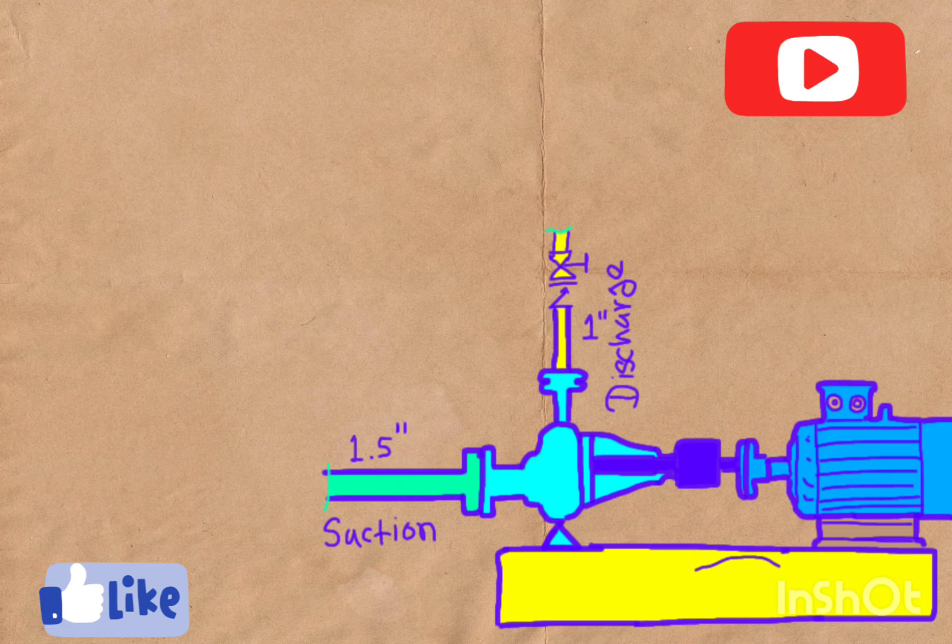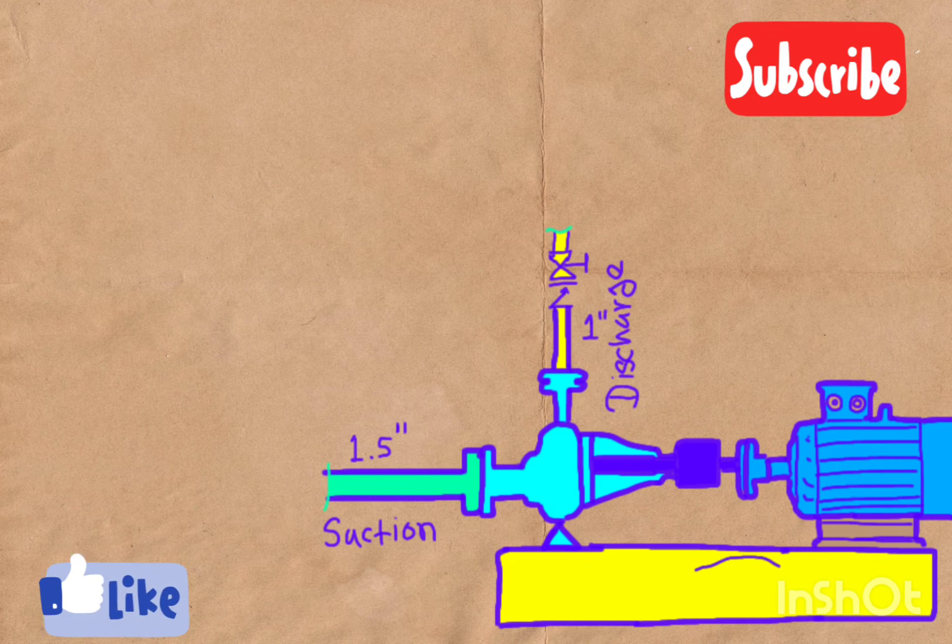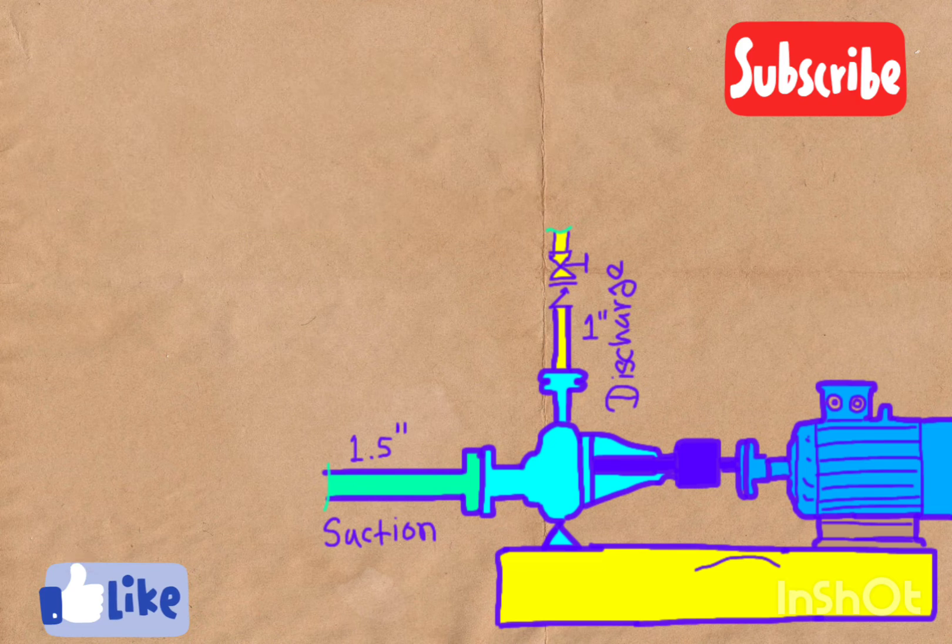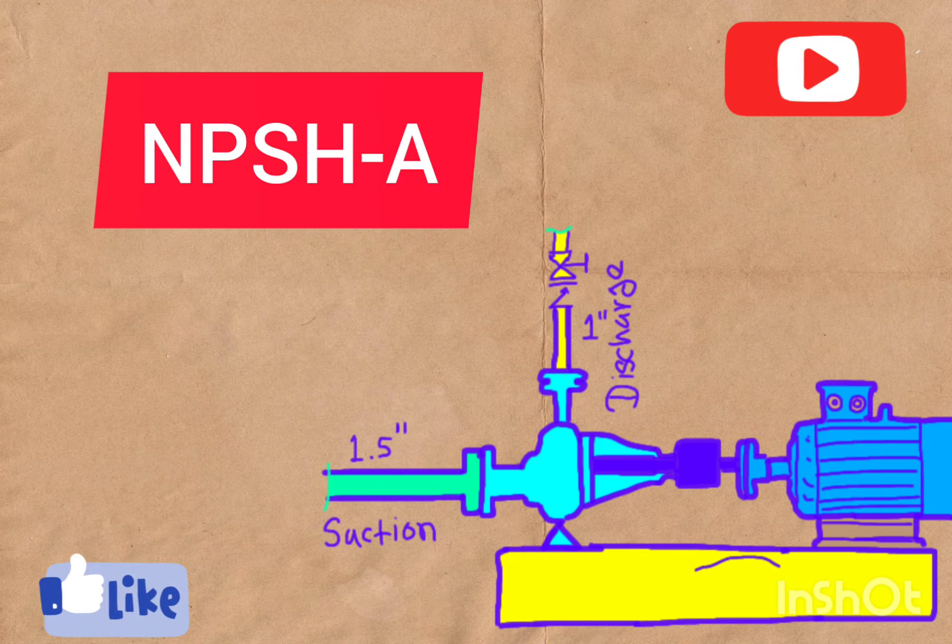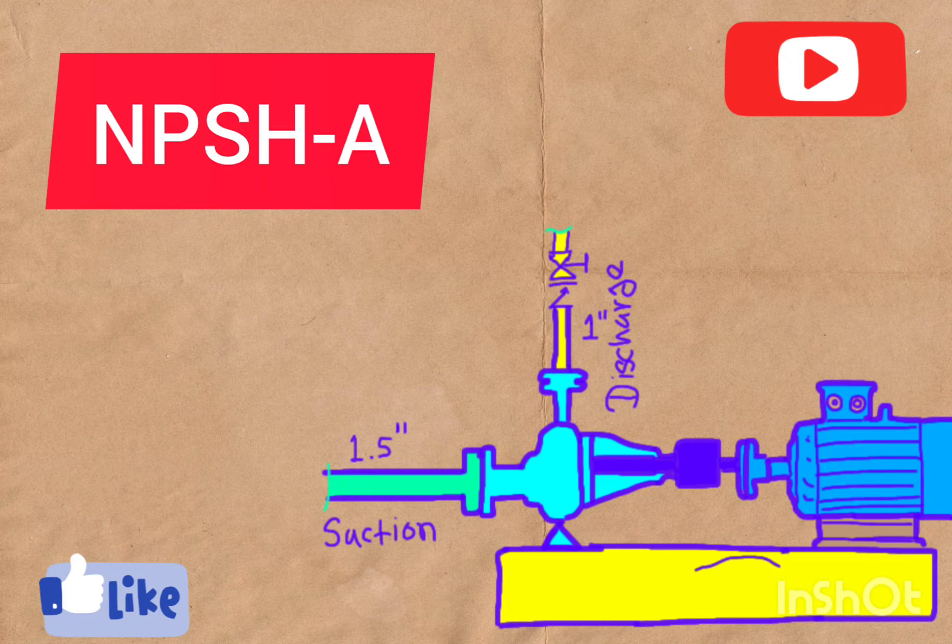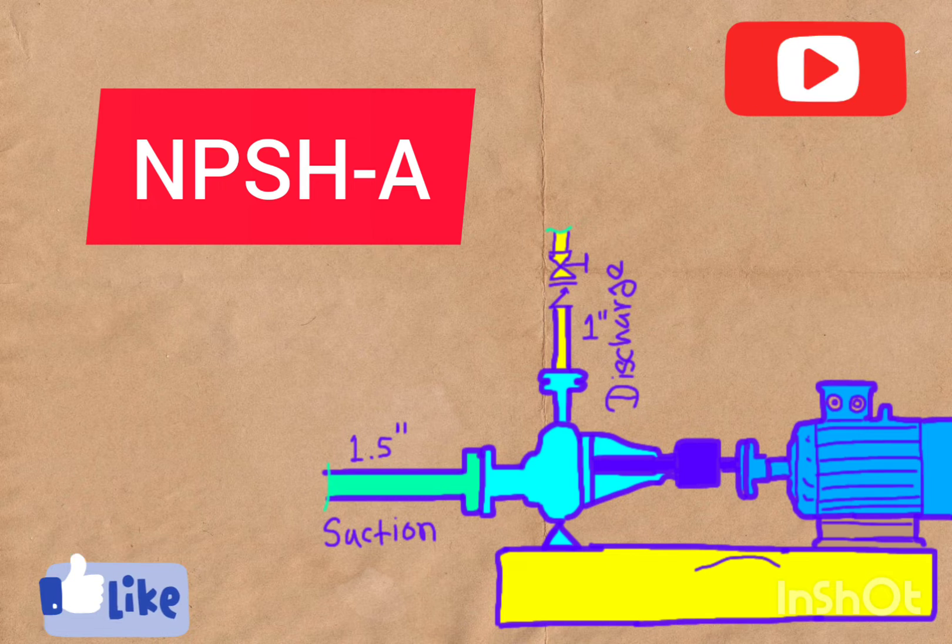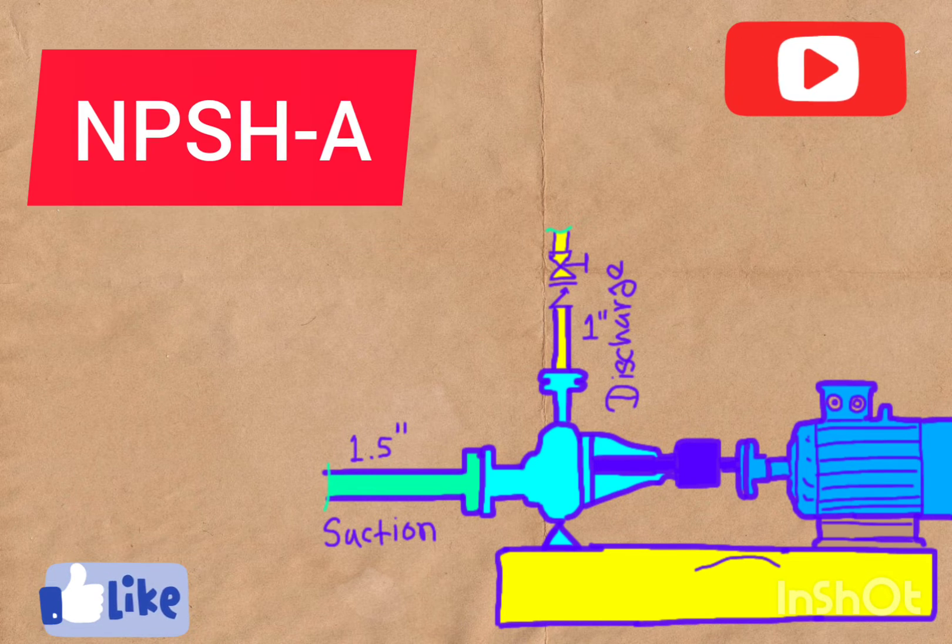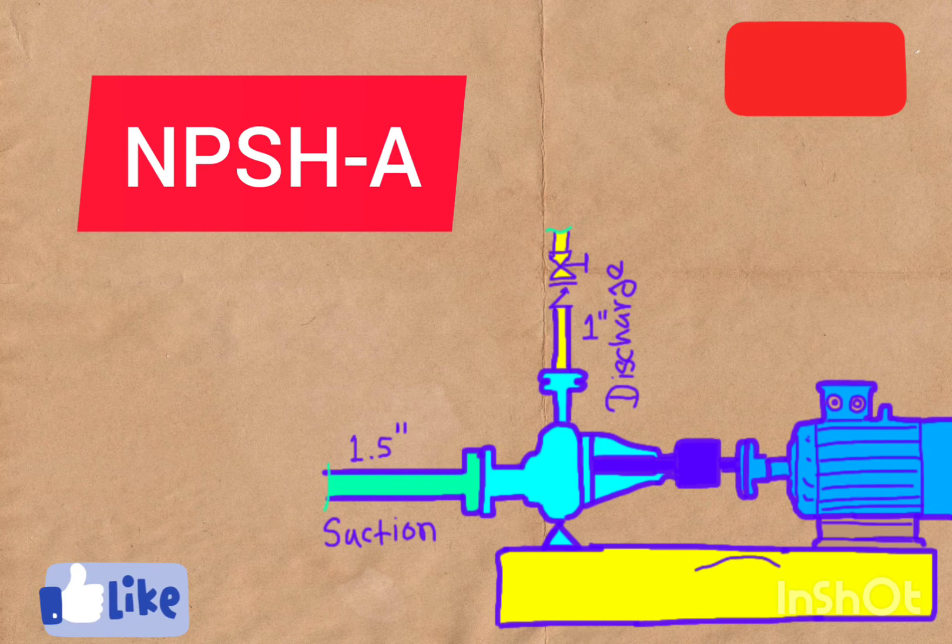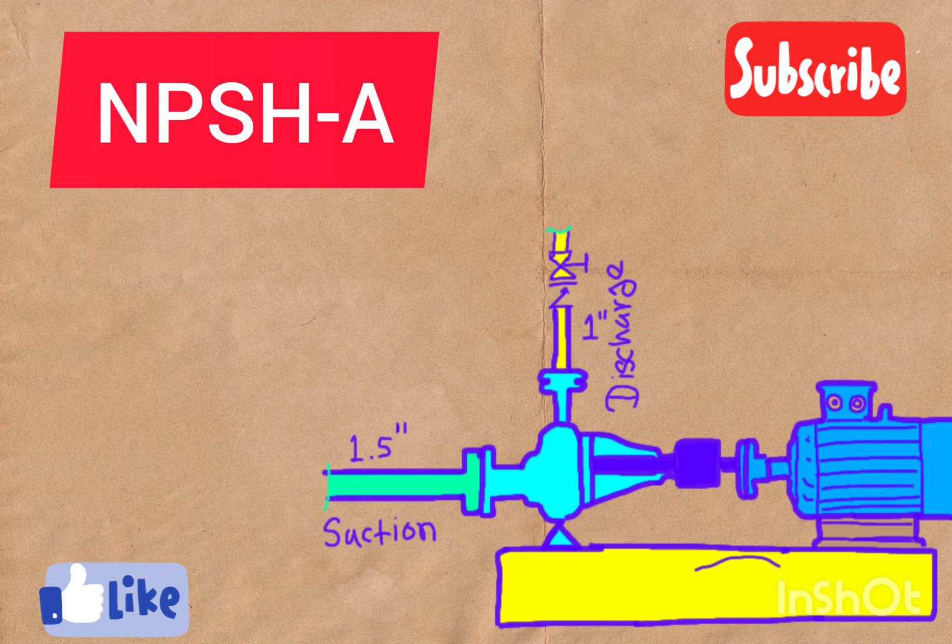So let's move toward the second reason, and the second reason is NPSH-A. Imagine your pump has a bodyguard named NPSH-A. It stands for Net Positive Suction Head Available - big words, I know - but it's just making sure there's enough pressure to keep cavitation away.